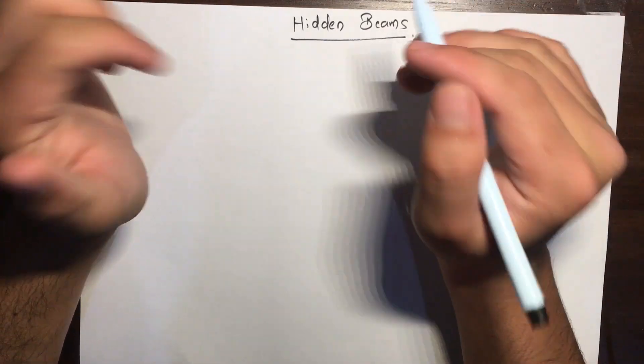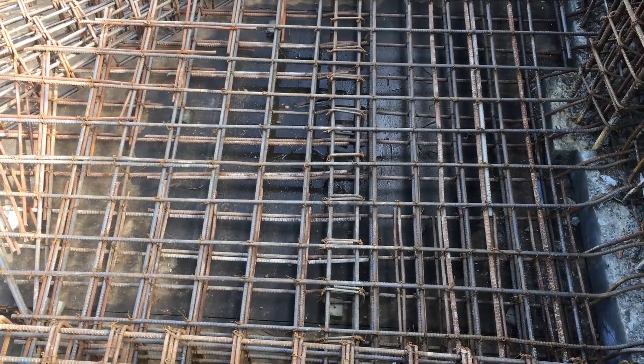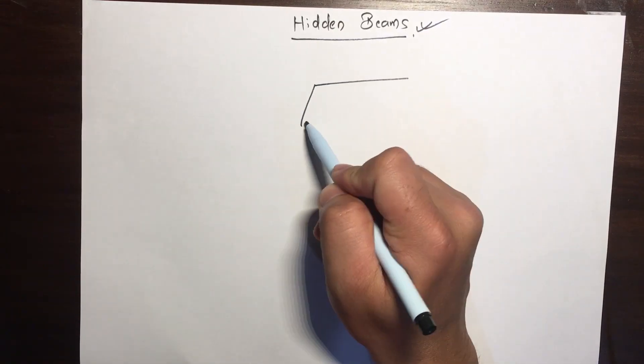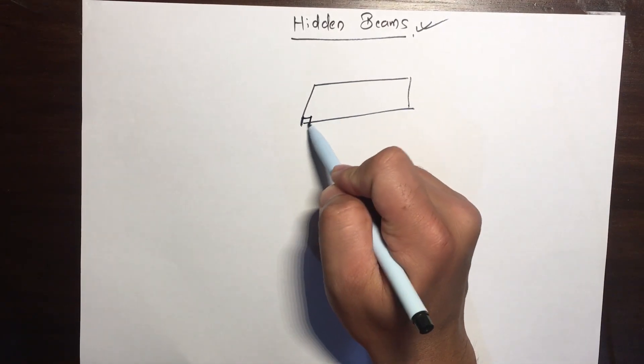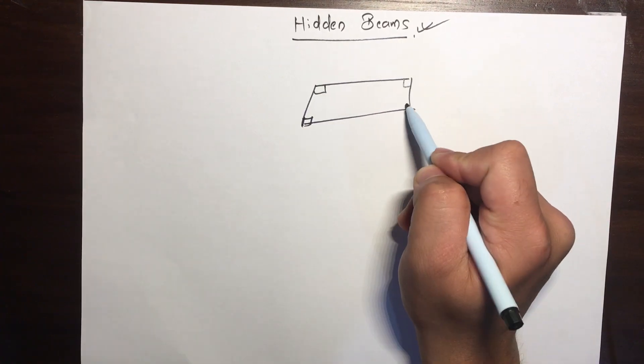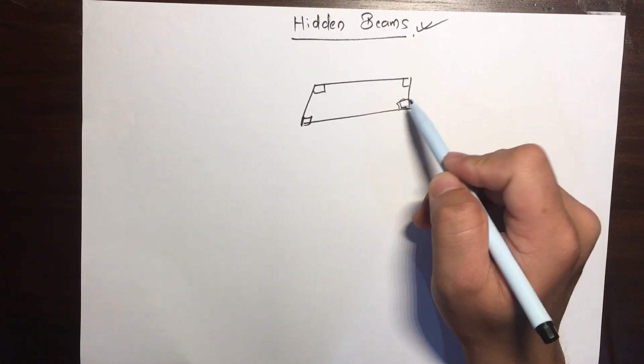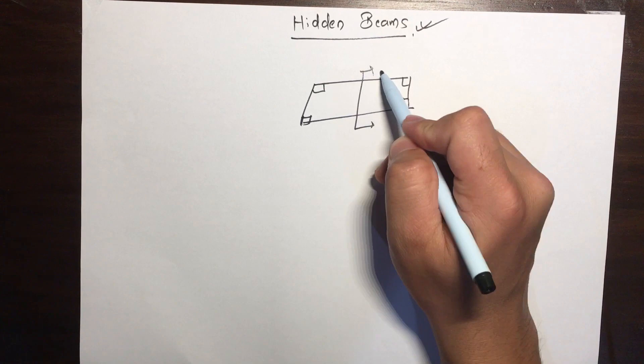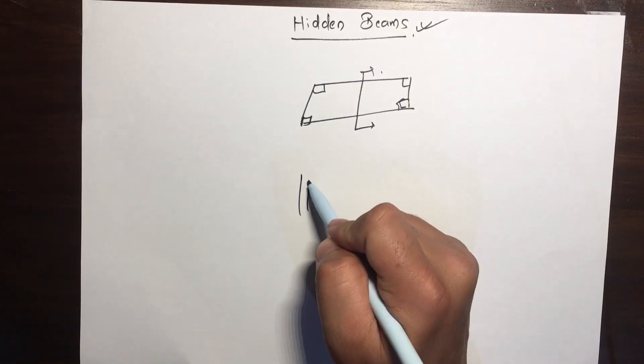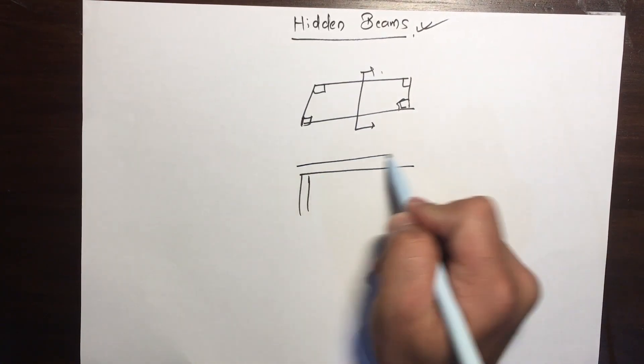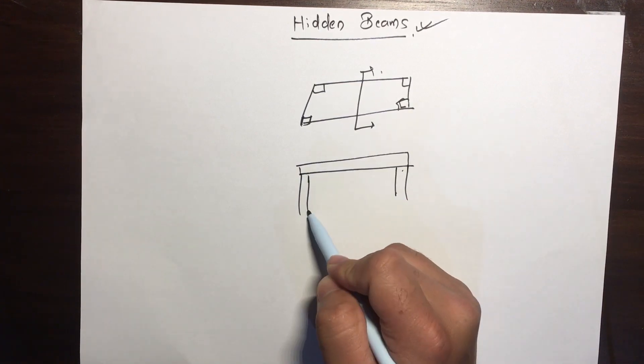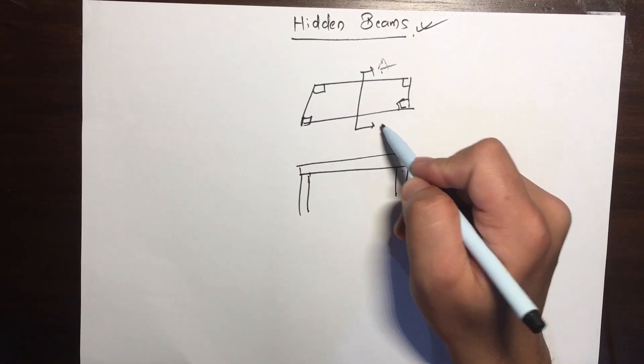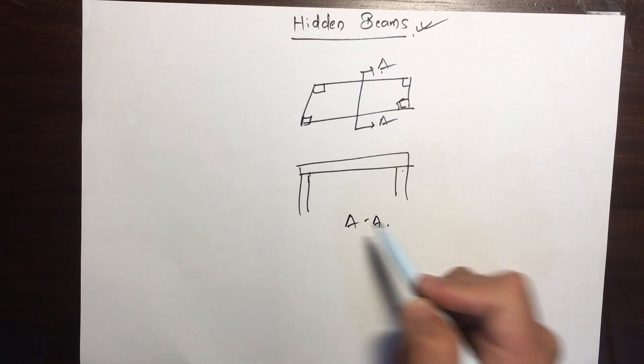Hey guys, welcome to the Interview Equation series. In this video we'll be talking about hidden beams. Suppose you've got a slab spanning over two directions with columns at the corners. If you cut this section, you will see these two columns, your slab over it, and the column. This is your section, suppose it's the A section.